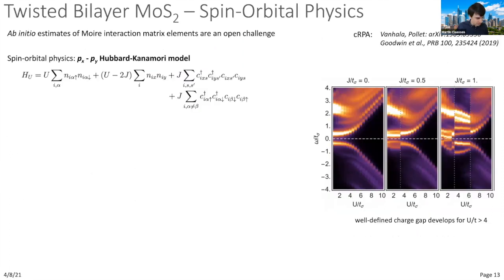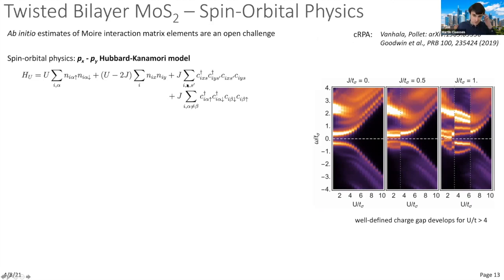Let's briefly discuss the interacting phases this model permits. Calculation of interaction parameters is out of reach for ab initio simulations with thousands of atoms in the unit cell—in principle one should use constrained RPA calculations as done by theoretical groups referenced here. Instead, we take a local interacting Kugel-Khomskii-type Hubbard model and treat interaction parameters as free parameters, focusing on the quarter-filling case where, as a two-orbital model, spin-orbital physics at strong interactions may be quite interesting.